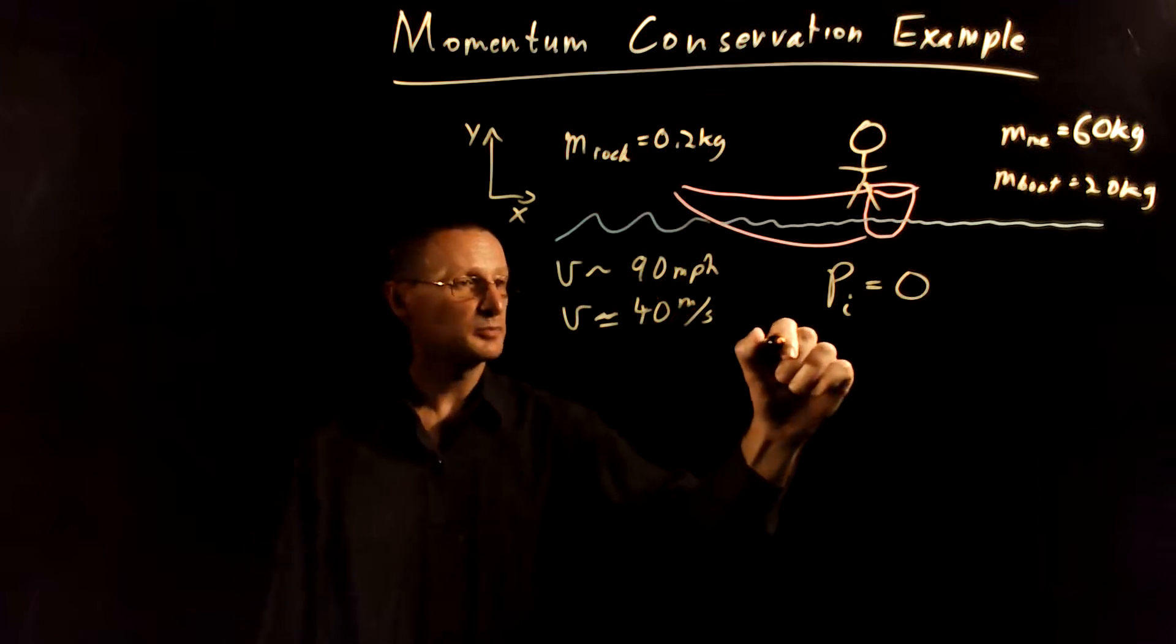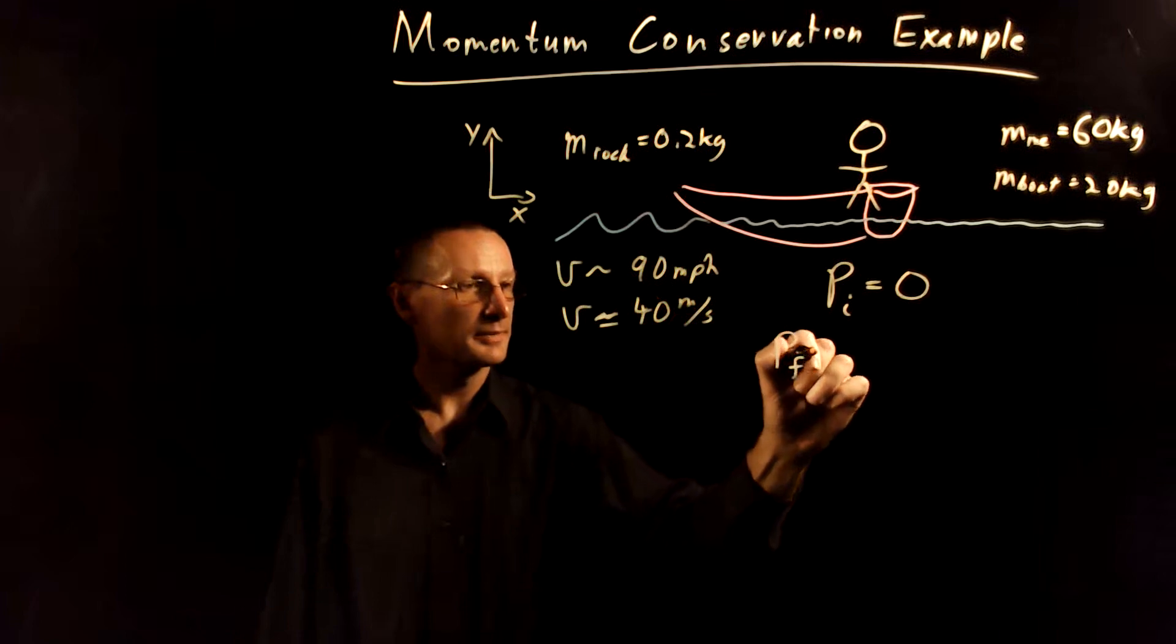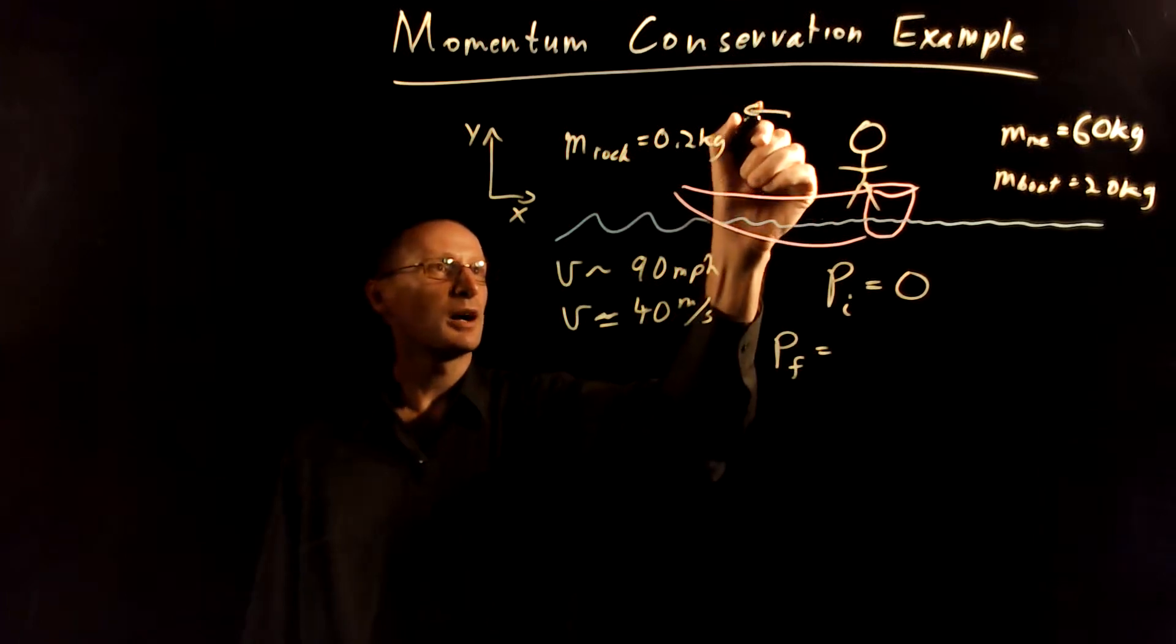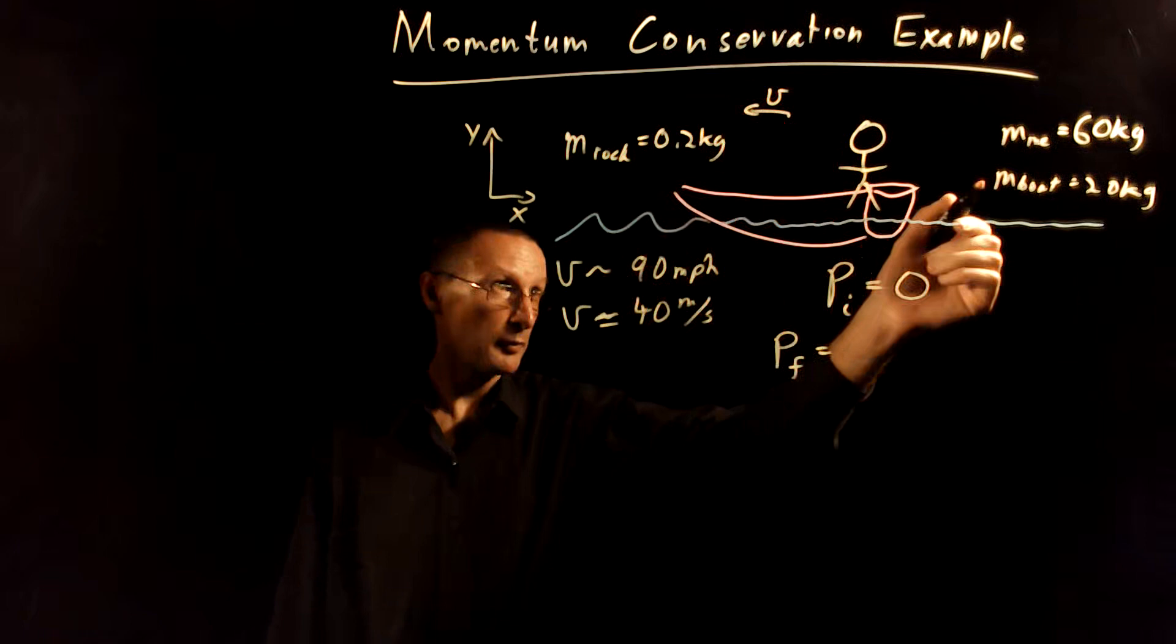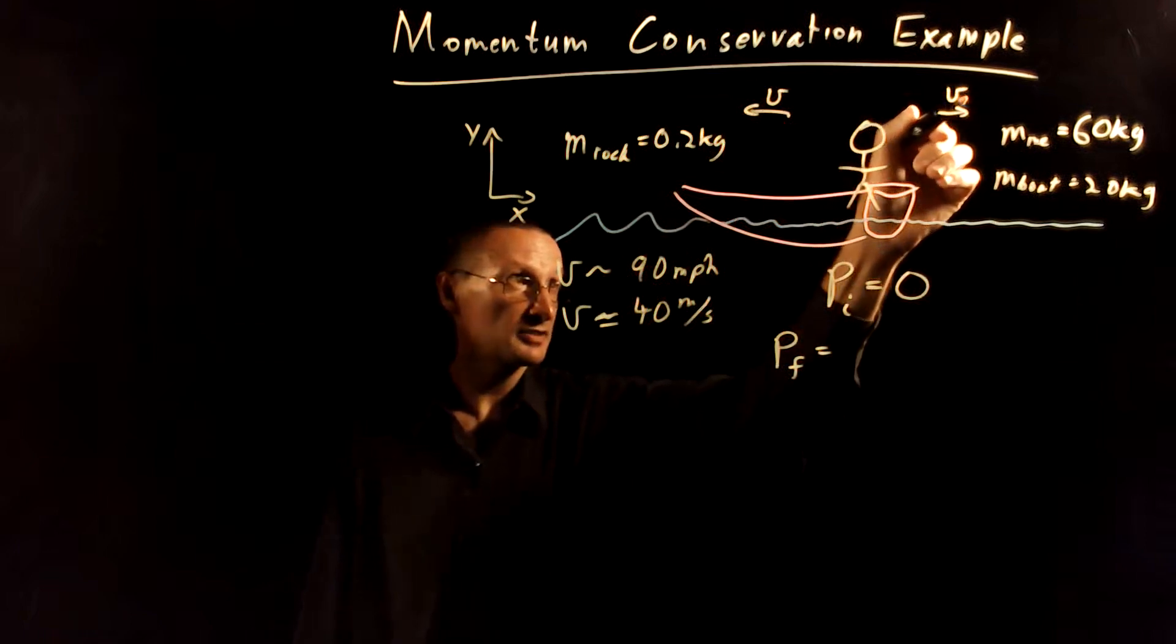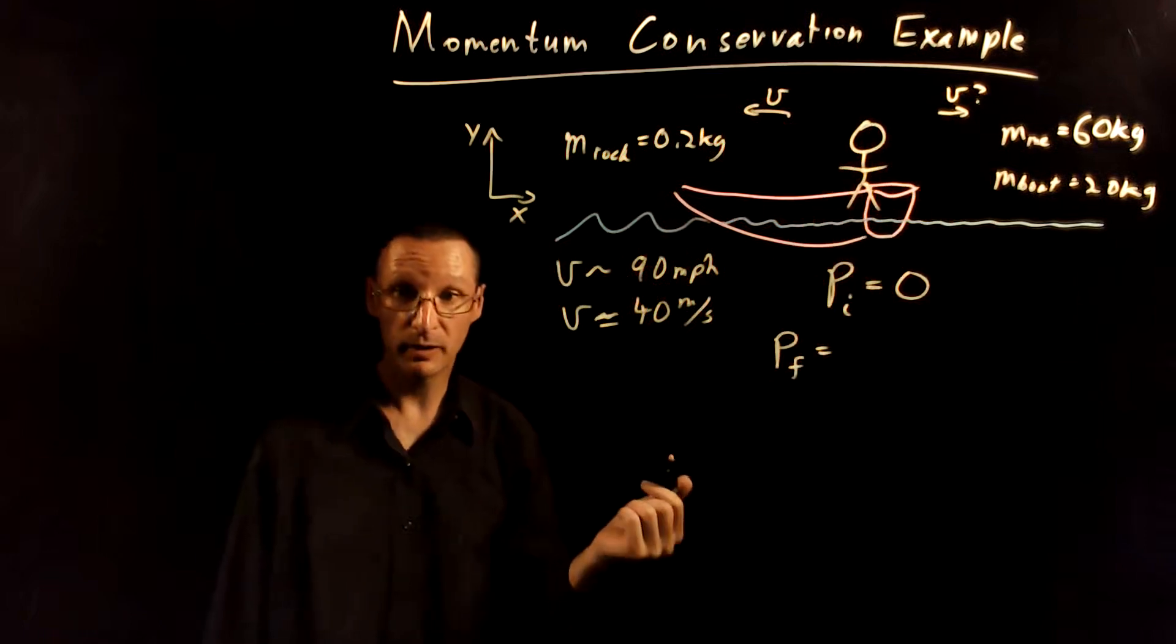Then as we throw the rock, if we throw the rock with some velocity to 40 meters per second, then we're going to get a recoil velocity back this way, and this is the velocity we want to find.